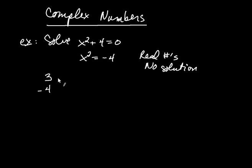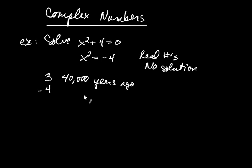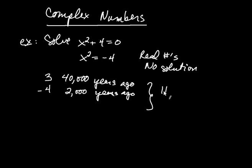The number 3 — the counting numbers were used starting around 40,000 years ago. People were notching bone or whatever it was, counting — I see 3 gazelle, 7 tigers, whatever it was. The number negative 4, that's much more complicated, much more abstract. That would appear in history about 2,000 years ago — people first began discussing negative numbers. All numbers are human inventions. These are clearly useful: 3 is clearly useful, negative 4 is clearly useful.